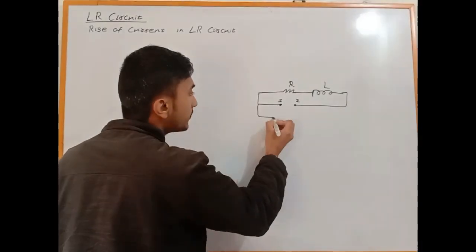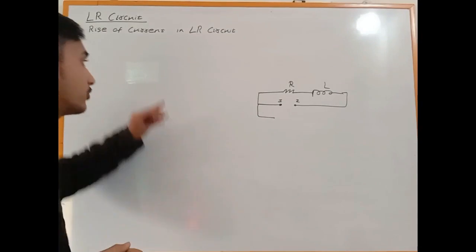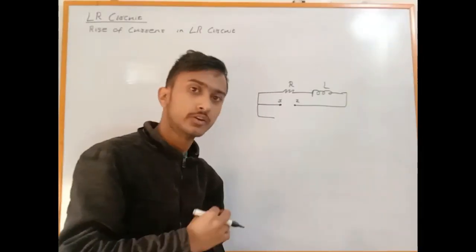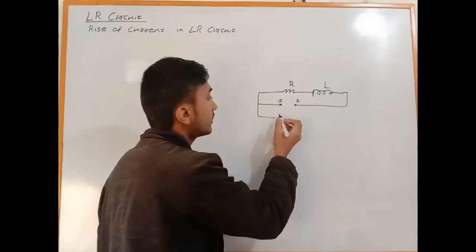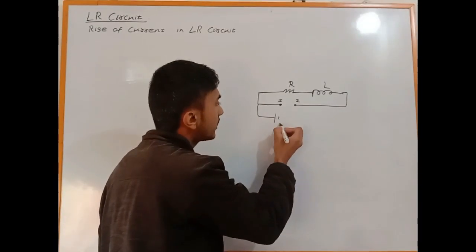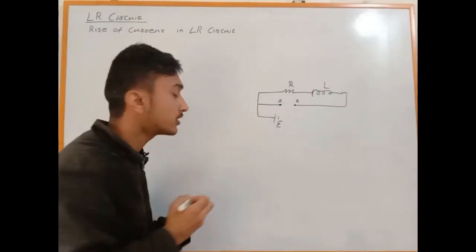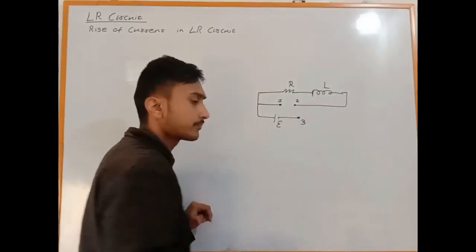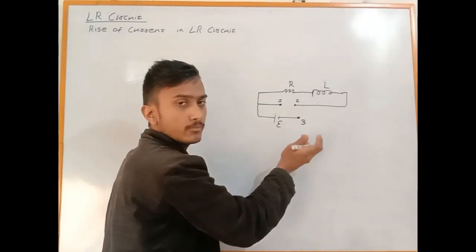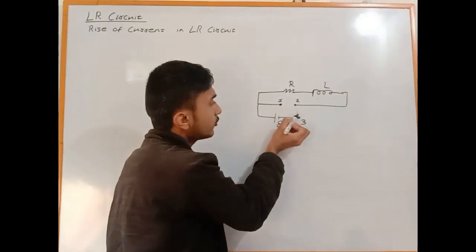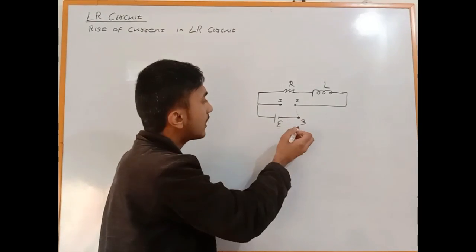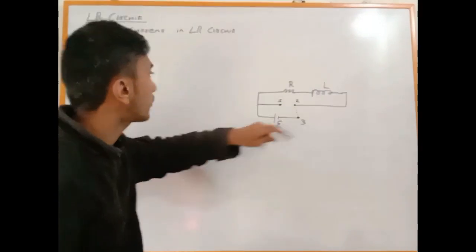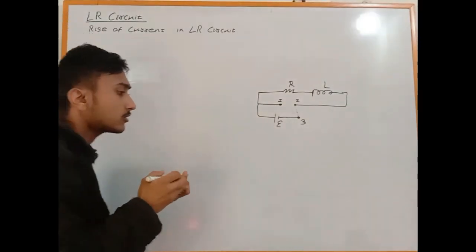The circuit has a battery and switches - key one, key two, and key three. When we connect key two and three together, the circuit is complete and current begins to develop in the circuit.